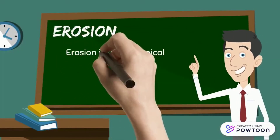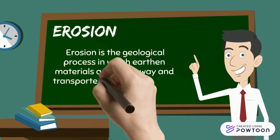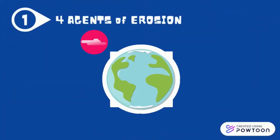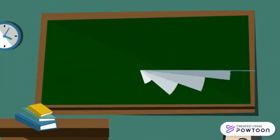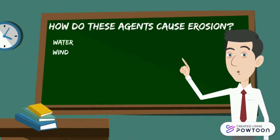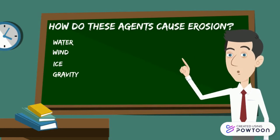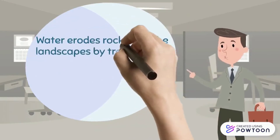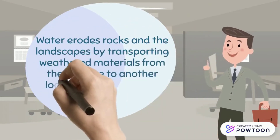Erosion is the geological process in which earthen materials are worn away and transported by natural forces. There are four major agents of erosion: wind, water, ice, and gravity. Let's start first with water. Water erodes rocks in the landscape by transporting weathered materials from their source to another location where they are deposited.